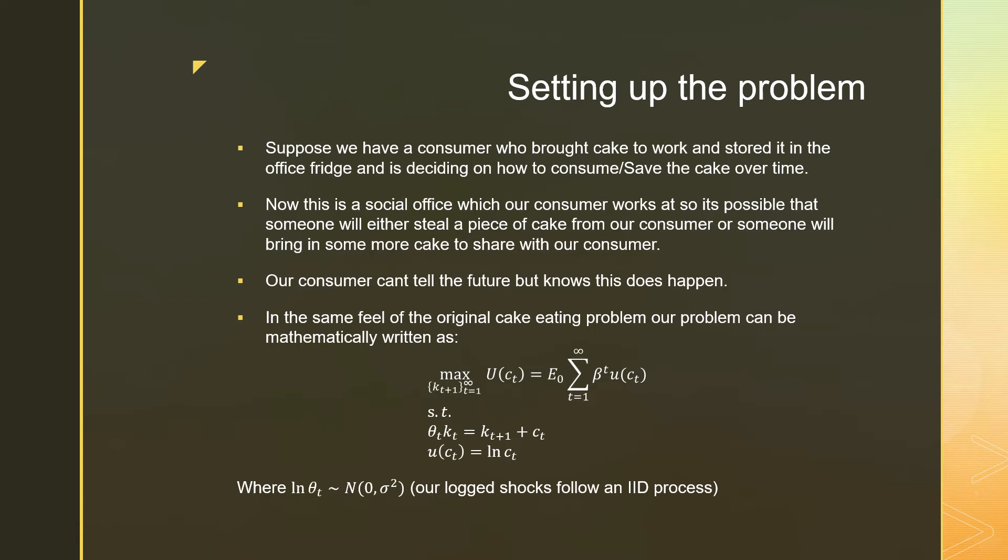In terms of setting up the problem, suppose we have a consumer who bought a cake to work and stored it in the office fridge and is deciding how to consume or save that cake over time. This is an infinite horizon; there's no retirement. He's just deciding how he's going to eat that cake over this infinite time frame in discrete time. Now, this is a social office, so it's possible that someone will either steal a piece of cake from our consumer or someone will bring in some more cake to share with our consumer.